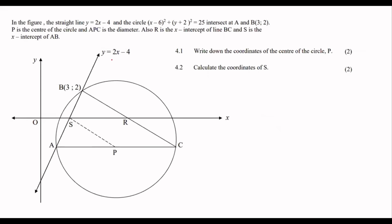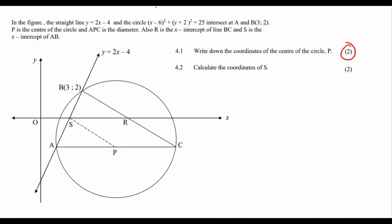They give us a circle and the circle equation. Write down the coordinates of the center of the circle — that's very easy. The center of the circle: the x-coordinate will be 6 and the y-coordinate will be negative 2.